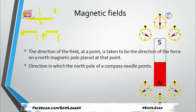So while the direction of the field is defined as the direction of force on a north pole, a simpler definition is: the direction of the compass needle shows the direction of the field. The compass needle is free to move — it is magnetized, with a red end for north and a white end for south.